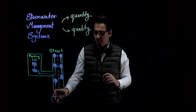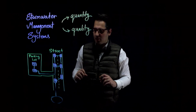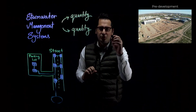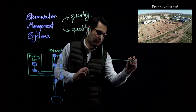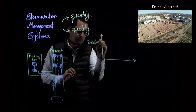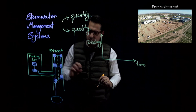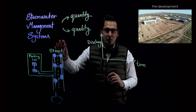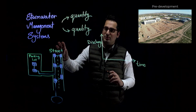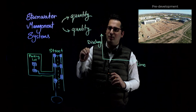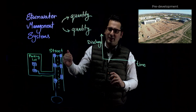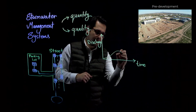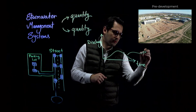The quality side is obvious — we care about the water quality of the receiving body of water. Now let's talk about quantity. In the natural environment — pre-development, before this area was built up — the hydrograph, which shows discharge over time, looks quite different. Because water can infiltrate naturally into the soil, it takes a long time to recharge the groundwater and eventually reach the receiving body of water, so the pre-development hydrograph has a low, gradual peak.